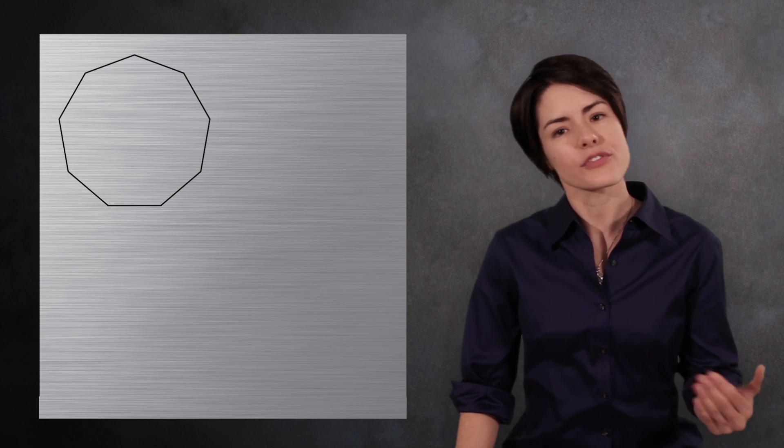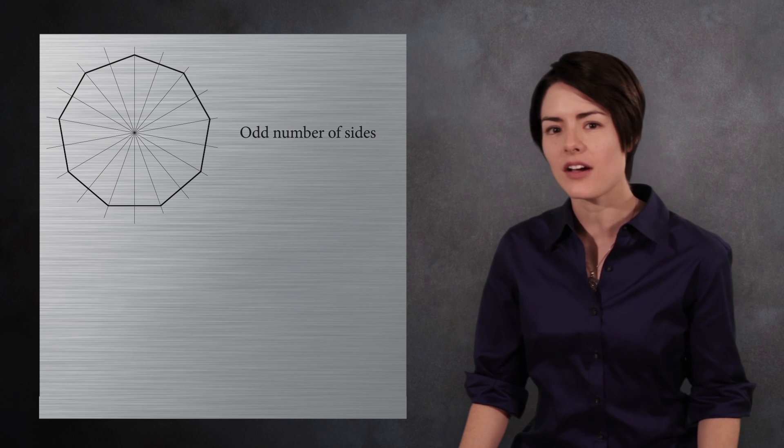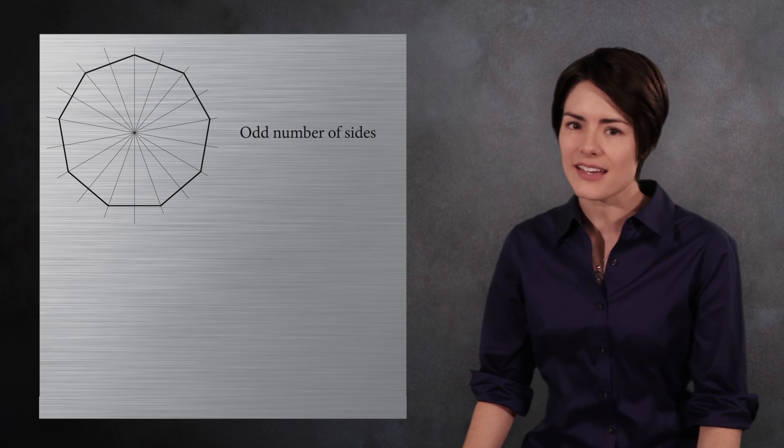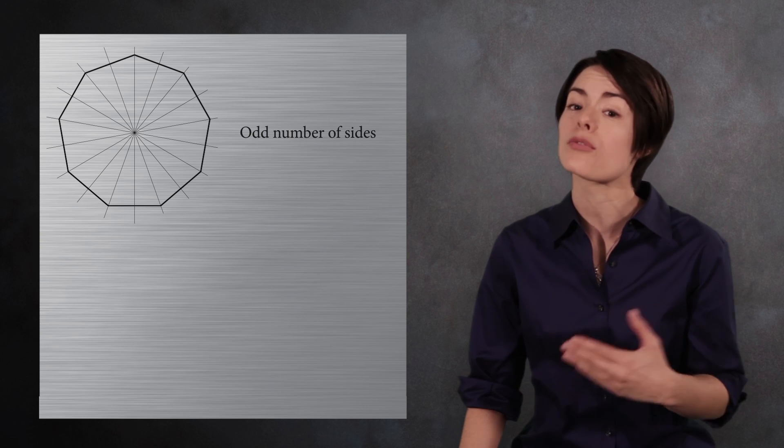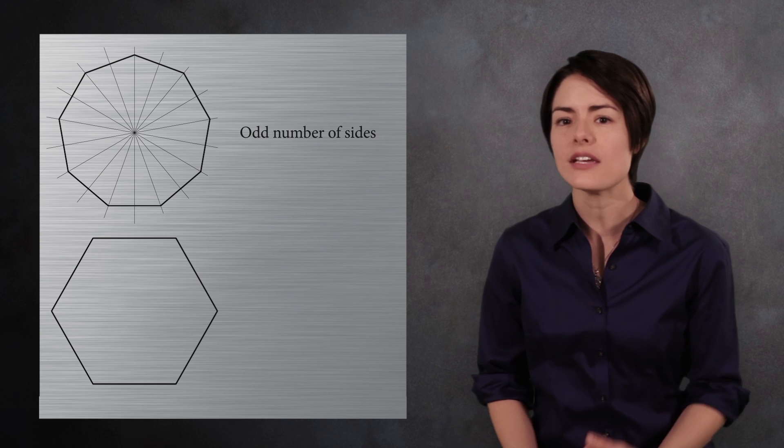Another symmetry of this polygon is reflection. If the polygon has n sides, then there are n different reflections. When the polygon has an odd number of sides, the axes of symmetry are the lines through the vertices. If there are an even number of sides, then the axes of symmetry are the lines through opposing vertices and the lines through opposing sides.